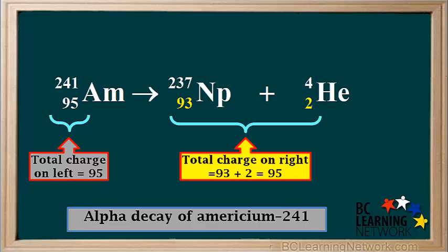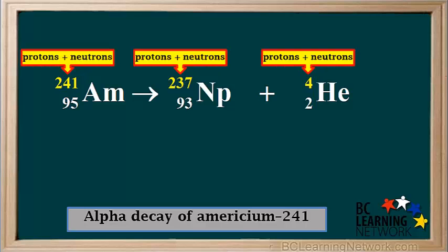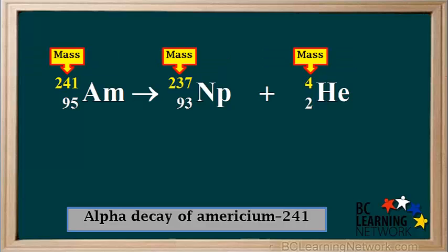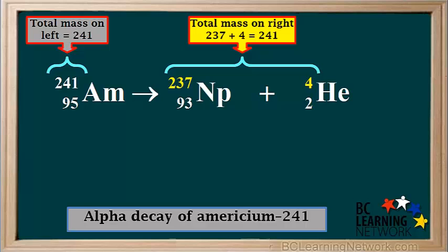Now we'll look at the numbers on the top left of each symbol. This number represents mass. In the nuclei of atoms, the mass is contributed by protons and neutrons, so this number is also equal to the total number of protons and neutrons, called the mass number. We will see that mass is also conserved. The total mass on the left side is 241, and the total mass on the right side is 237 plus 4, which is also equal to 241. The mass represented by the top left number is always conserved in nuclear equations. We simply express it as a number without worrying about units.